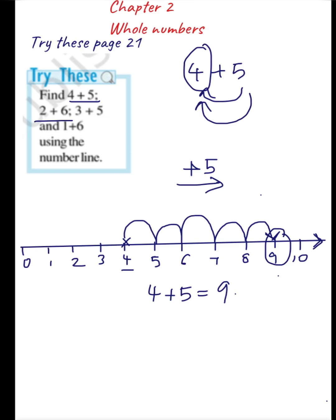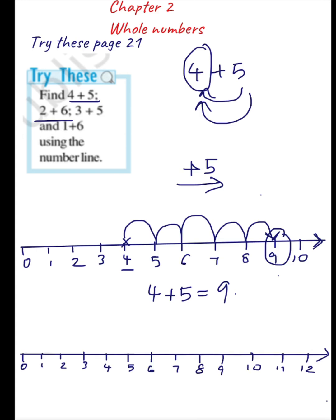Now let's see the next question: 2 plus 6. Let's consider a number line. I am going to add 2 plus 6, so I should start from 2. Plus 6 means I have to move 6 steps towards the right.